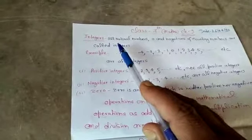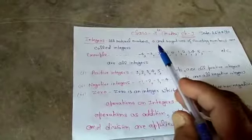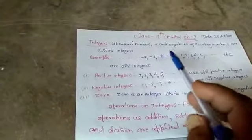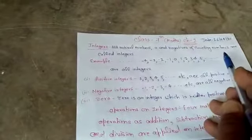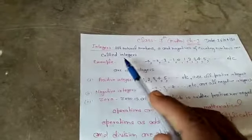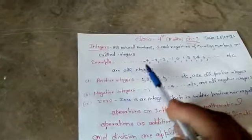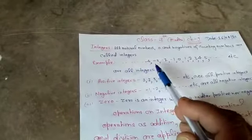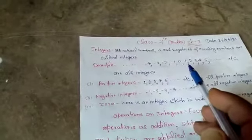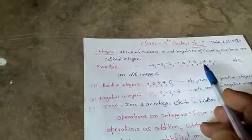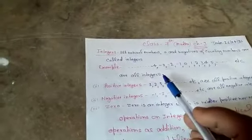Please see carefully all natural numbers, 0, and negative of counting numbers are called integers. For example, minus 4, minus 3, minus 2, minus 1, 0, 1, 2, 3, 4, 5 etc are all integers.